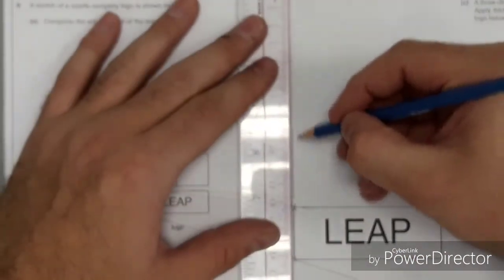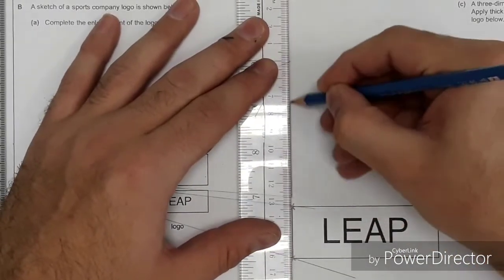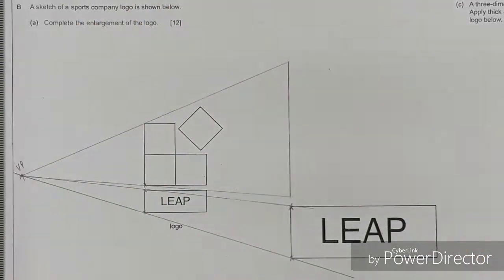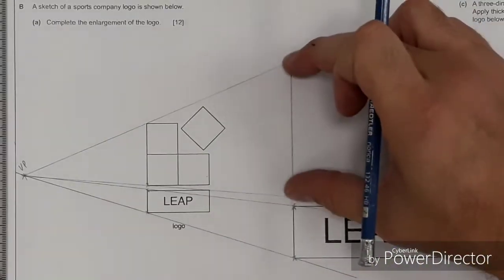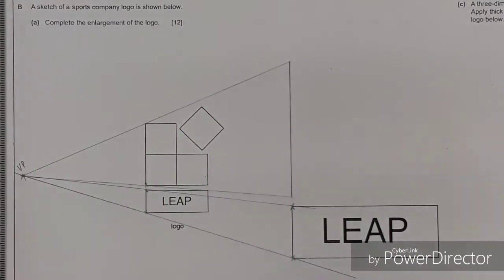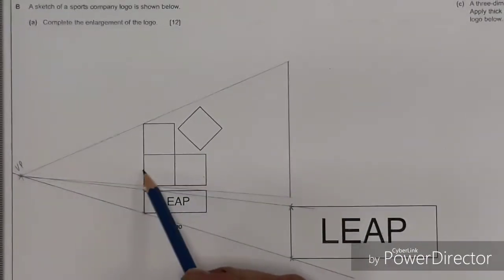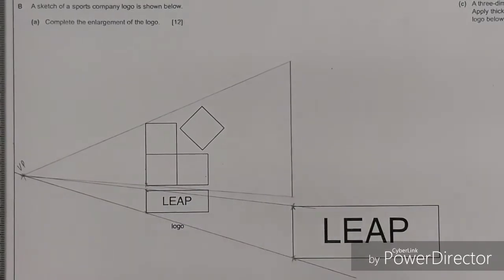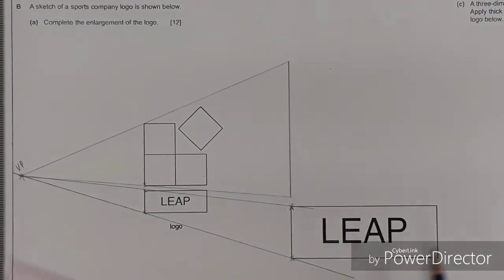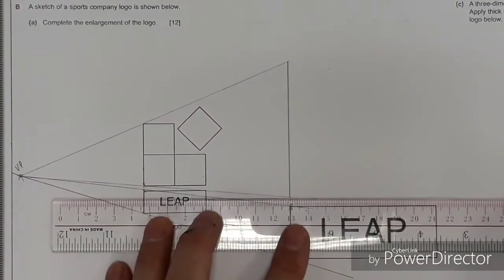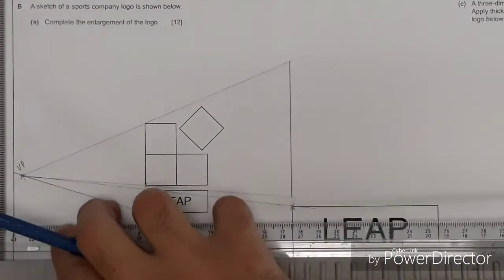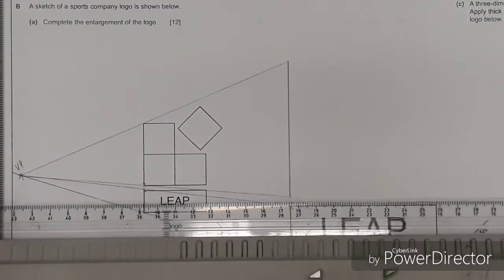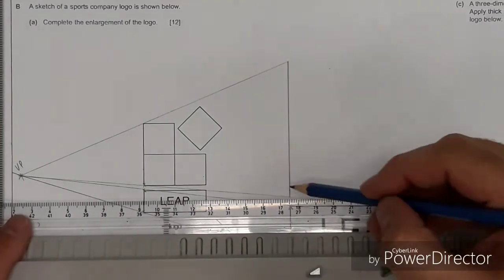Take a projection line from the vanishing point through that top corner — this gives us the end height of our logo. So we've got the L shape, the full height, and the full enlargement. In terms of width, we don't necessarily know the width of these boxes, but what we can do is run a line parallel to the logo.